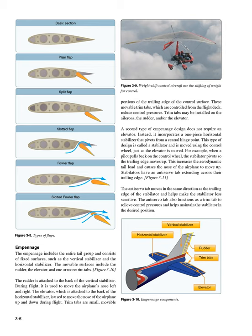A second type of empennage design does not require an elevator. Instead, it incorporates a one-piece horizontal stabilizer that pivots from a central hinge point. This type of design is called a stabilator and is moved using the control wheel, just as the elevator is moved. For example, when a pilot pulls back on the control wheel, the stabilator pivots so the trailing edge moves up, increasing the aerodynamic tail load and causing the nose of the airplane to move up. Stabilators have an anti-servo tab extending across their trailing edge. The anti-servo tab moves in the same direction as the trailing edge of the stabilator and helps make the stabilator less sensitive. It also functions as a trim tab to relieve control pressures and helps maintain the stabilator in the desired position.